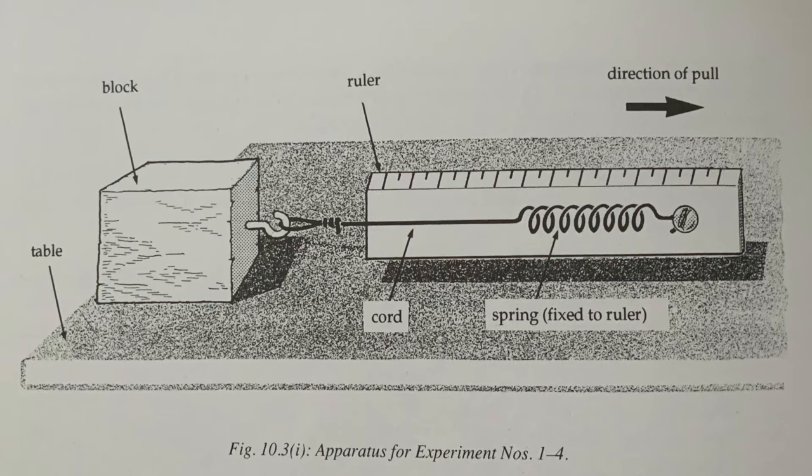Experiment number three: Starting again with only one block as in experiment number one, this time the block is given a little push so that the sliding movement over the table has already started when the length of the spring is read off. This length turns out to be about three inches as long as the block is kept sliding by pulling on the ruler. So the sliding friction is less than the maximum static friction. The speed with which the ruler is pulled makes no difference to the result. The spring reaches the same extension each time.